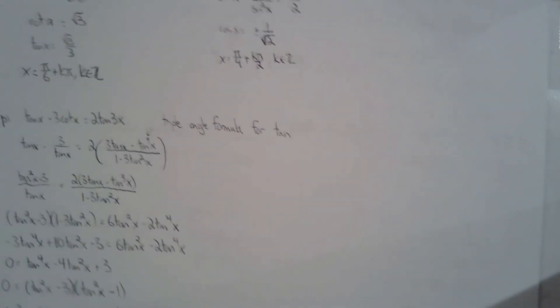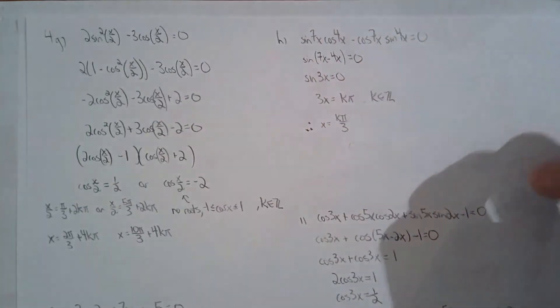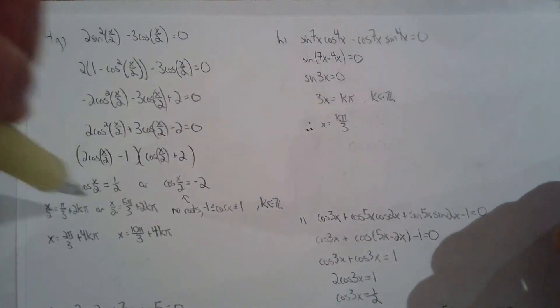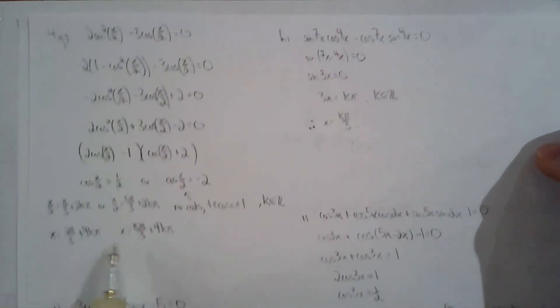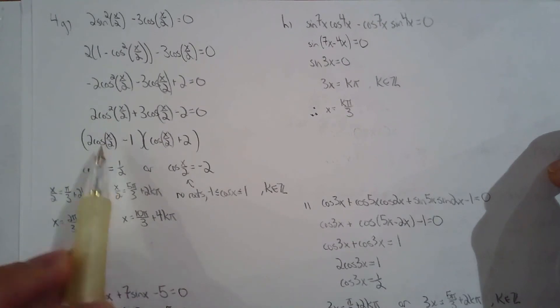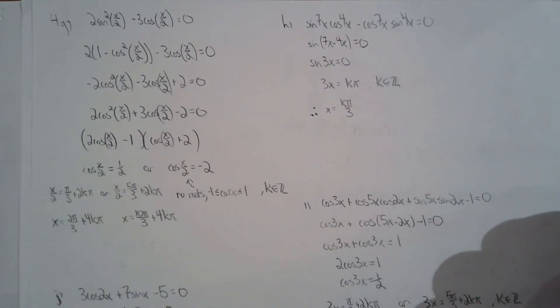For 4g — Pythagorean identity, quadratic factor. Just be careful — it's going to end up being 4k pi because it's x over 2, which means the period is 4 pi instead of 2 pi.